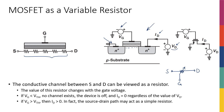If V_G, the gate voltage, is smaller than the threshold voltage, there's not going to be any channel, so the device is going to be off. That means regardless of how much voltage I apply to the drain or source, I won't have any current — I_D is going to be zero regardless of V_D. But if gate voltage is higher than the threshold voltage, the transistor is turned on, I_D is greater than zero, and the source-drain path may act as a simple resistor.